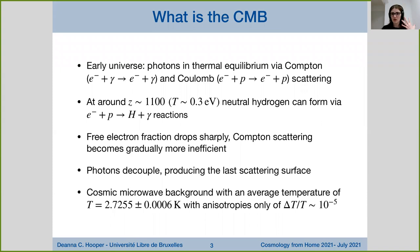In the early universe, photons were kept in thermal equilibrium with electrons via both Compton and Coulomb scattering. At around a redshift of about 1100, when the universe was at an average temperature of about 0.3 electron volts, neutral hydrogen could begin to form. This happens when an electron and a proton come together and the inverse reaction is no longer energetically favored. At this point neutral hydrogen forms and can no longer directly re-ionize, so the free electron fraction quickly drops because electrons are now bound within the hydrogen.